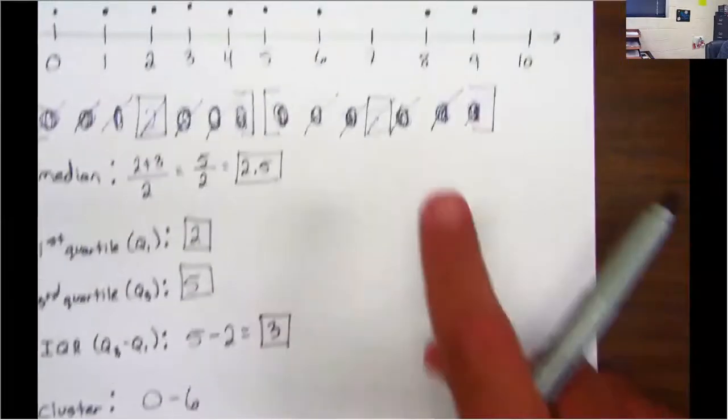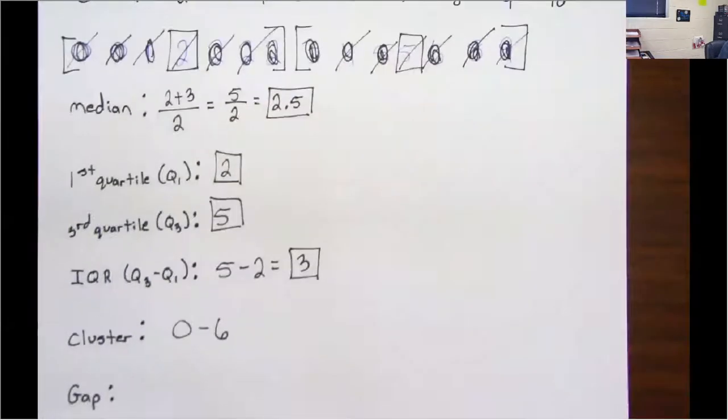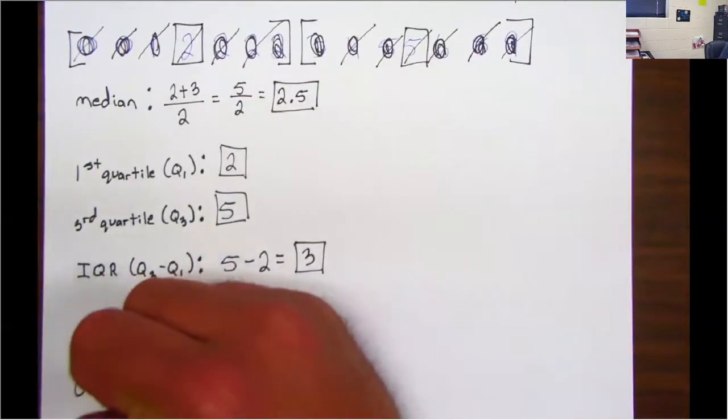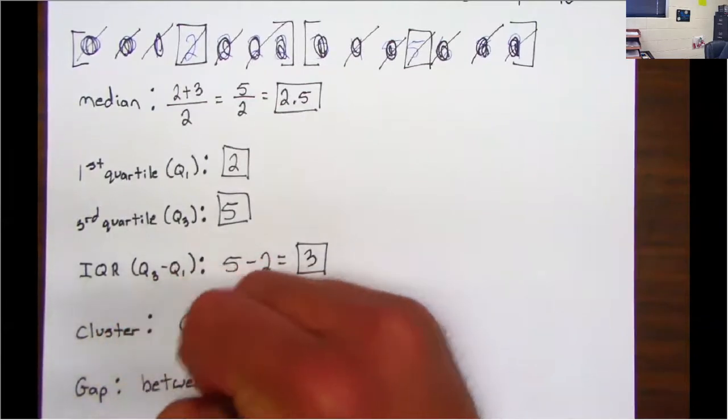Next one is gap. That's right here, it's at seven. It's between six and eight, so you write between six and eight.